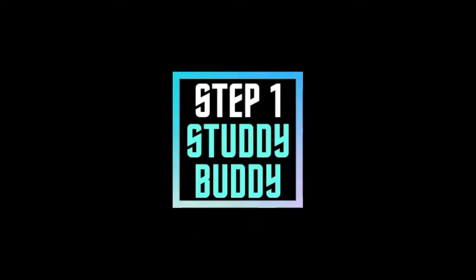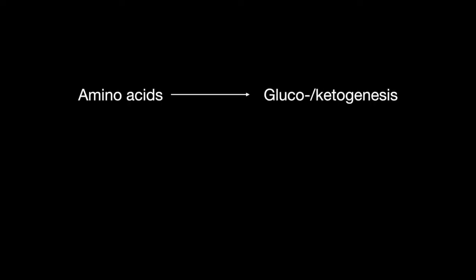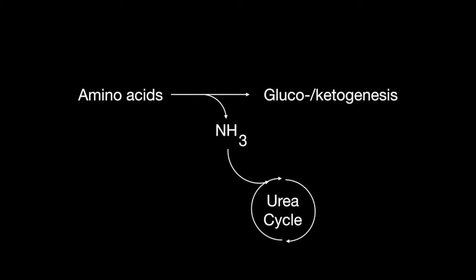Welcome to the Step 1 of View study guide. In this lesson, we learn about the urea cycle, transport of ammonia by alanine, and hyperammonemia. When amino acids are metabolized to enter into glucogenesis or ketogenesis, nitrogen is a byproduct. The body removes it via the urea cycle.